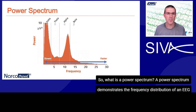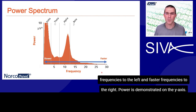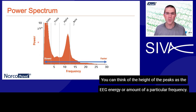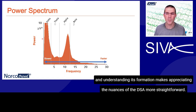So what is a power spectrum? A power spectrum demonstrates the frequency distribution of an EEG epoch, which is a term for a segment of the EEG. Frequency is plotted along the x-axis with slower frequencies to the left and faster frequencies to the right. Power is demonstrated on the y-axis. You can think of the height of the peaks as the EEG energy or amount of a particular frequency. The density spectral array is derived from this power spectrum, and understanding its formation makes appreciating the nuances of the DSA more straightforward.